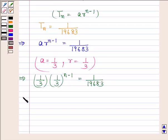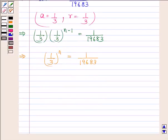Now, this implies 1 by 3 to the power n is equal to 1 by 19683, which equals 1 by 3 to the power 9. On comparing powers,